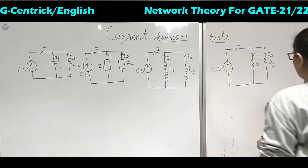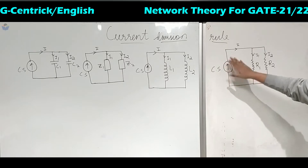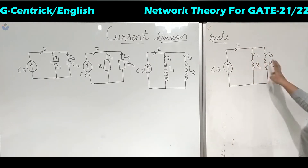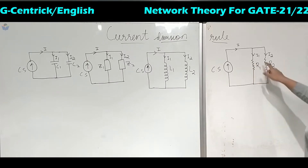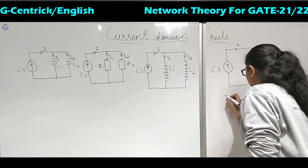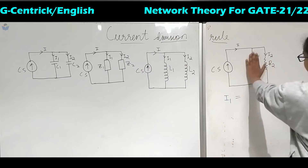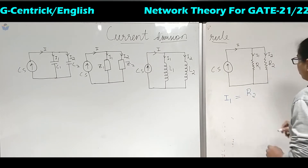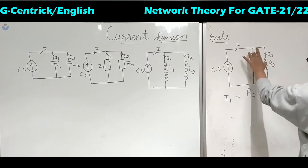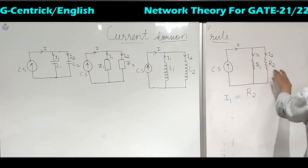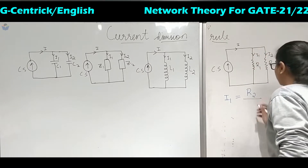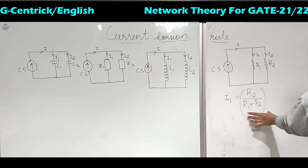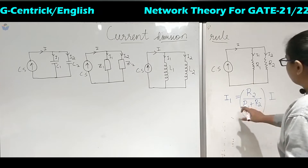Coming to the first circuit diagram, you have a current source with R1 and R2. The current I is flowing from the current source. When I comes here it gets split into two parts which have different values of resistors R1 and R2. If you have to find the value of current I1, you have to leave the branch where you want to find the current and take the value of the resistor of the other branch, that is R2. Do not take the resistor which is present where you have to calculate I1. Take R2, then take the sum of the resistors, and multiply this whole equation with total current I. This is for calculating I1.